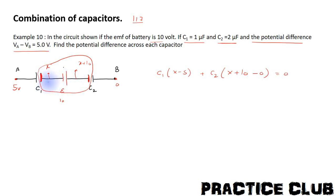So, this plate will be equal to 0. So, if C1 is 1 into X minus 5 plus C2 is 2 into X plus 10, this is equal to 0. And therefore, we will have X minus 5 plus 2X plus 20 is equal to 0.